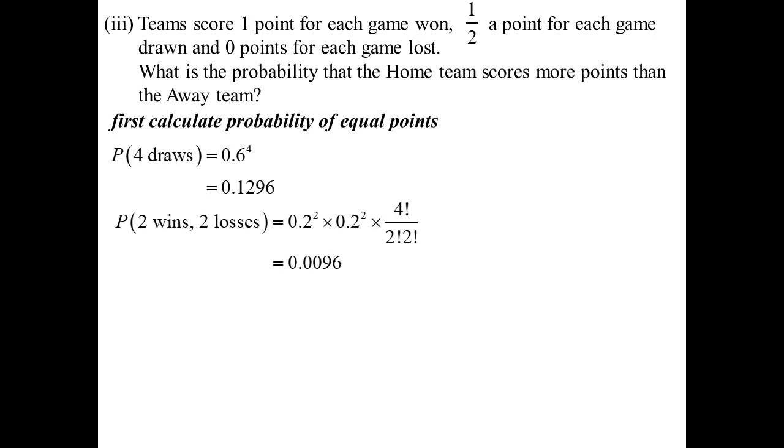But what else could happen? Two wins and two losses would mean they would end up with the same amount of points, because they both won two games, they both lost two games. So how many ways could that happen? Well, this is where it gets interesting. Probability of a win was 0.2, so 0.2 squared, win-win. Probability of a loss was 0.2, so 0.2 squared. But how many different ways could we have two wins and a loss? This one becomes like one of those word questions. How many words could you form using two W's and two L's? Four factorial divided by the repetitions, two factorial, two factorial, and we end up with that 0.0096.